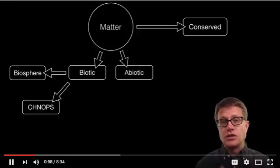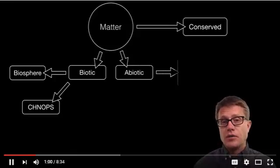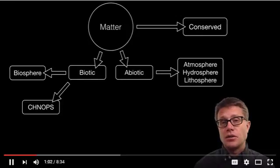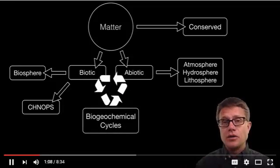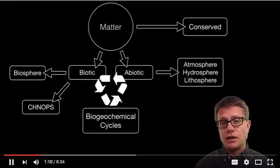Carbon, hydrogen, nitrogen, oxygen, phosphorus and sulfur. If we look at the abiotic factors that is going to be the atmosphere, lithosphere and hydrosphere. And so these biogeochemical cycles is going to be how the nutrients move between the living and nonliving.